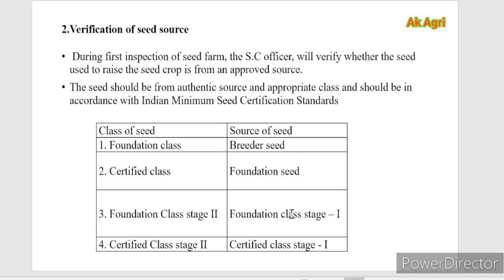The next phase is verification of seed source. During the first field inspection of a seed farm, the seed certification officer will verify whether the seed source used for production is from an approved source or not. The seed should be obtained from an authenticated source and appropriate class, in accordance with the Indian minimum seed certification standards. For example, for the production of foundation seed, the source seed must be breeder seed; for a certified class of seed, the source is foundation seed.